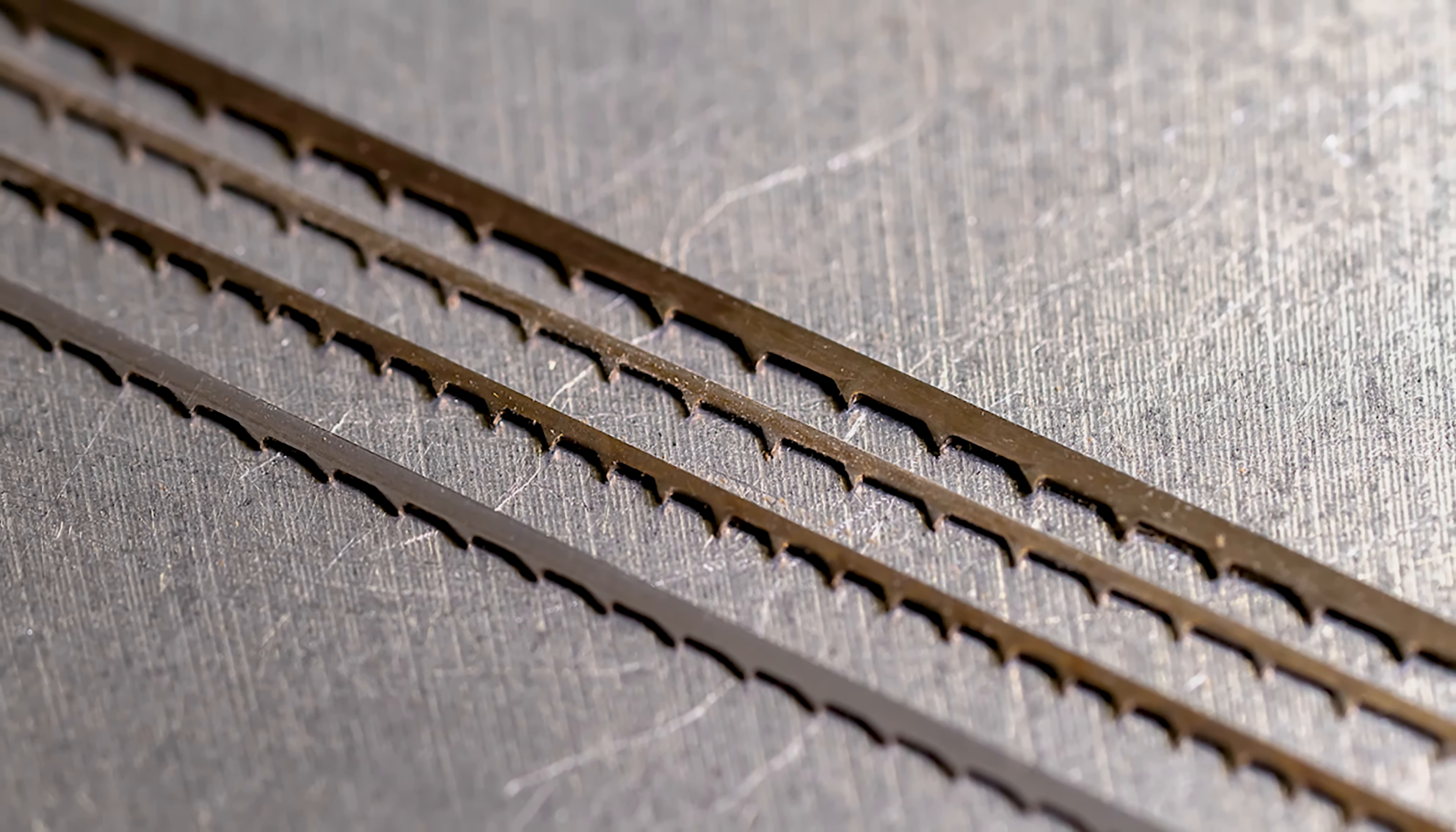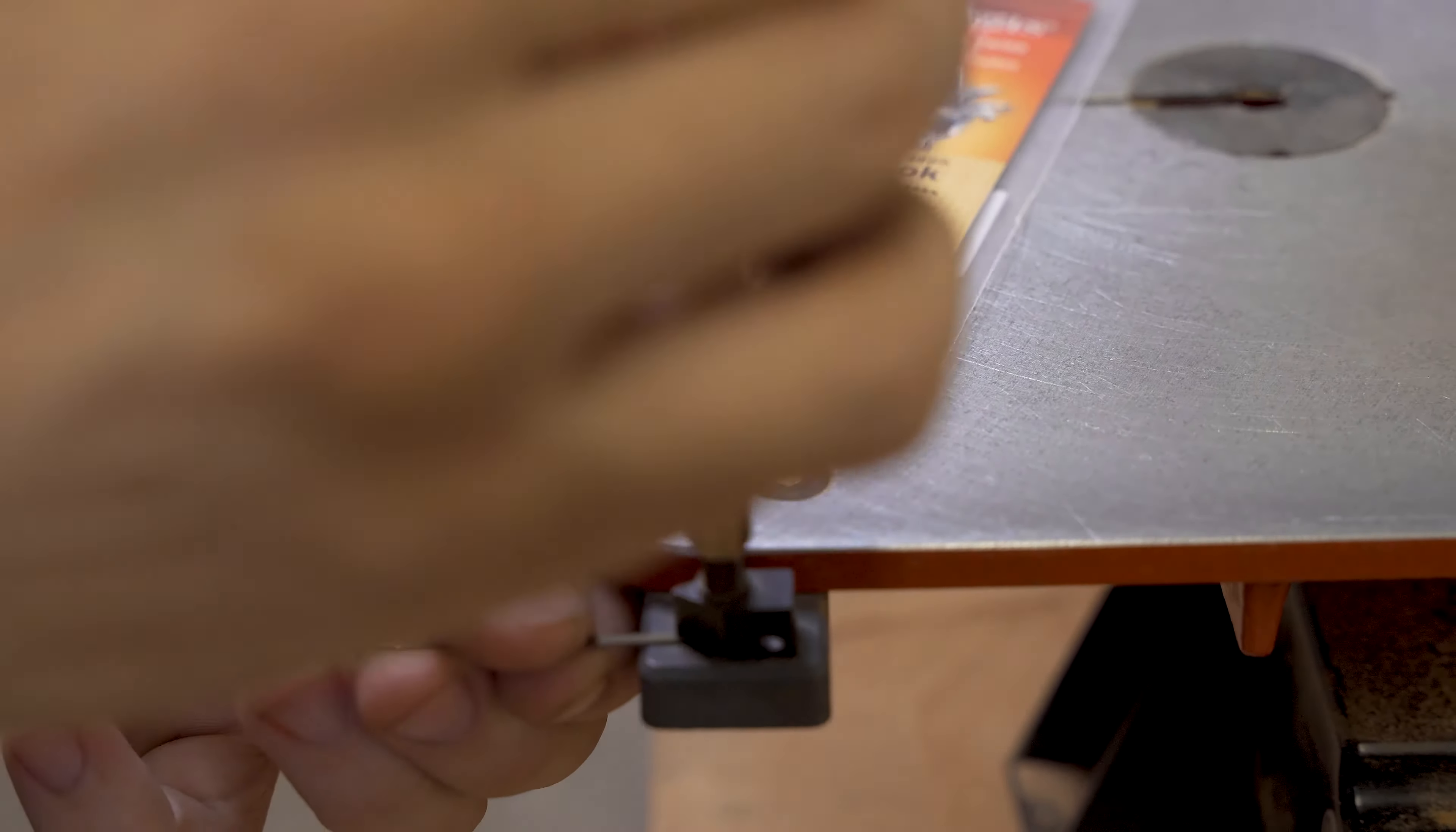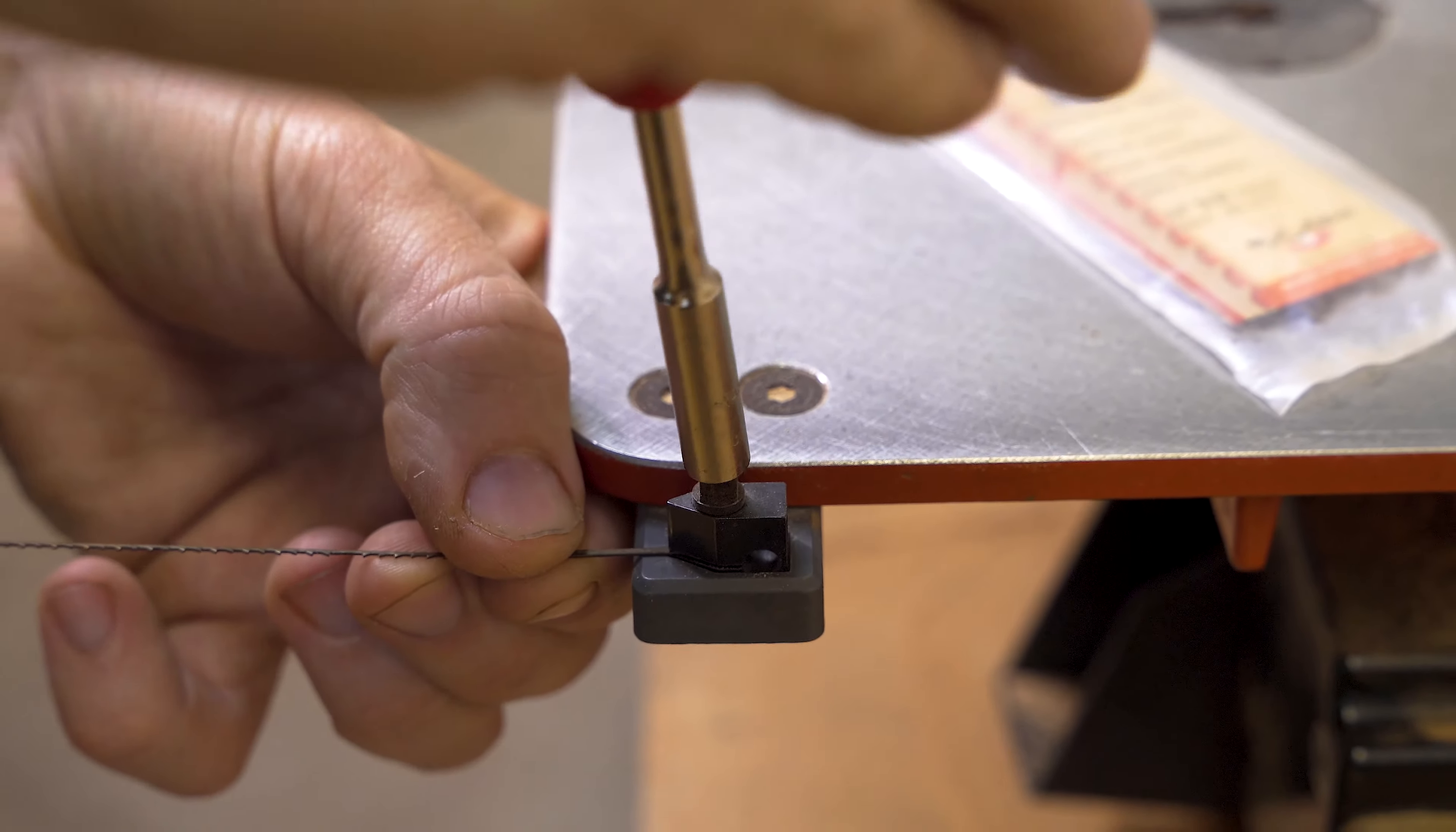If we start with Pegas blades, they offer a wide range of different blades and they make good quality scrollsaw blades. We found their hook blades particularly useful because we're working mainly in hardwoods. We also found their reverse tooth blade a regular choice for ourselves. We found that it was a good quality blade and did the job successfully.